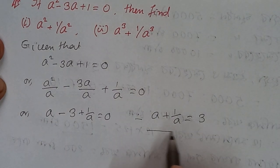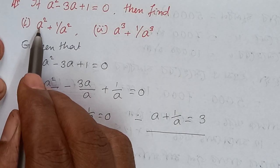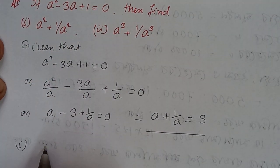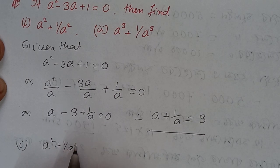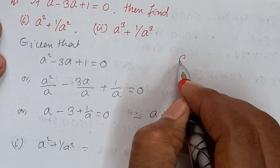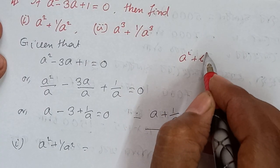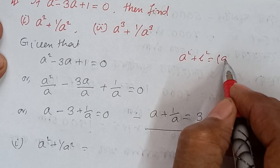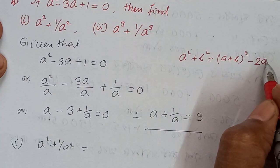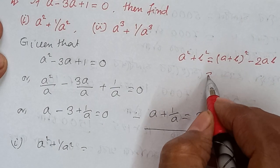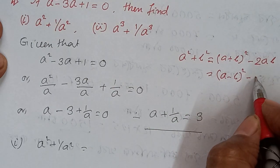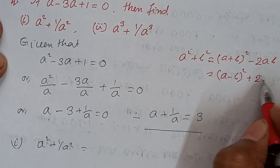For part 1, we need to find a square plus 1 by a square. We recall the formula: a square plus b square equals to a plus b whole square minus 2ab, or a minus b whole square plus 2ab.